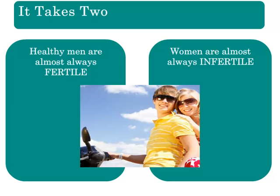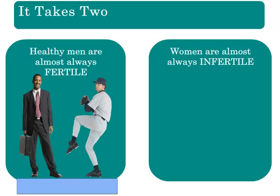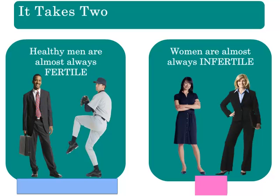It takes both a man and a woman to contribute to the creation of a new human being. Healthy men are almost always fertile — a man's fertility may decrease with age, but once he goes through puberty he can continually produce sperm and father a child even in his senior years. Women, on the other hand, are almost always infertile. Ovulation occurs on only one day per cycle, and the egg survives less than 12 to 24 hours if not fertilized. Fertile cervical fluid is critical for the filtration, transport, nurturing, and survival of sperm, defining the narrow window during which a couple can conceive.